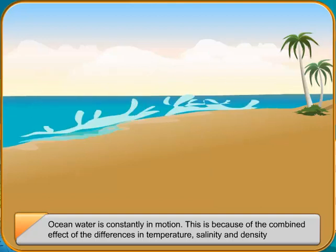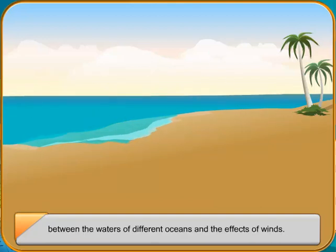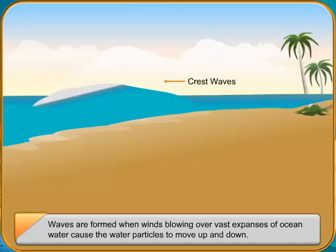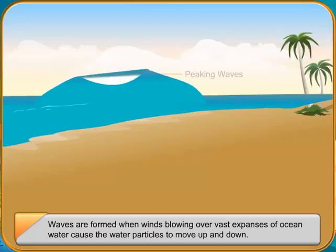Waves are formed when winds blowing over vast expanses of ocean water cause the water particles to move up and down. The stronger the winds, the greater will be the waves. The top of a wave is called crest and the bottom is called trough.